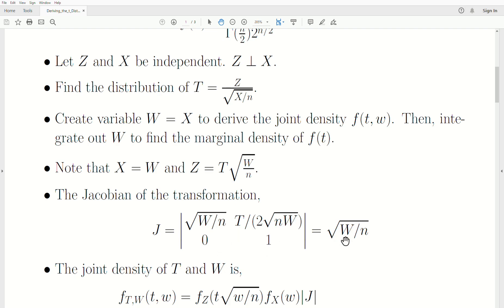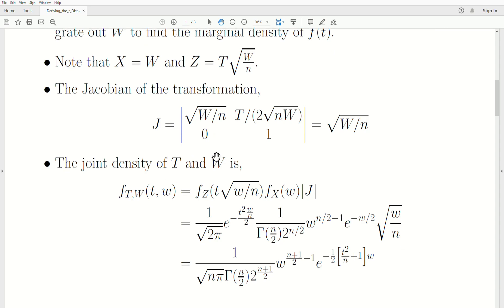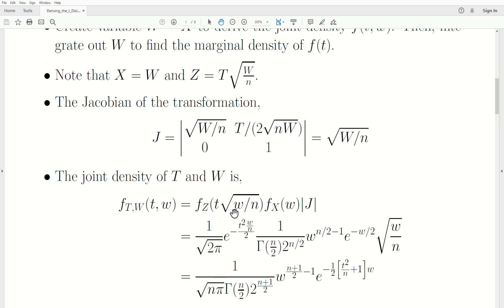You take the determinant and you get this. And then the joint density for T and W is this, and so you plug in what we have back transformed for Z, which is T times the square root of W over n.